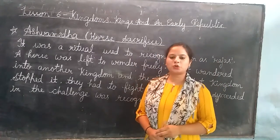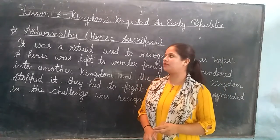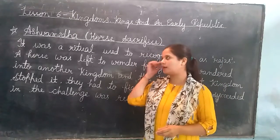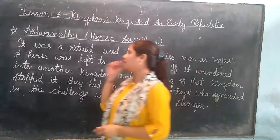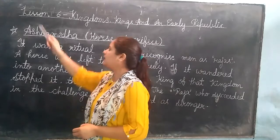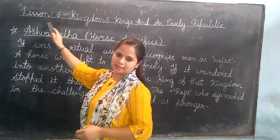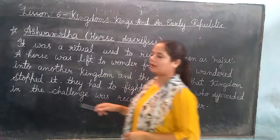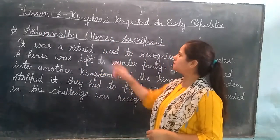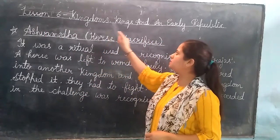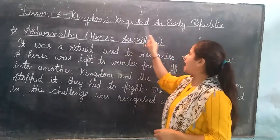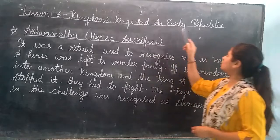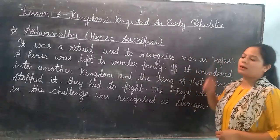A very good morning to all of you. Today we are going to start a new lesson in history — Lesson number 6. The name of our lesson is Kingdoms, Kings and an Early Republic.